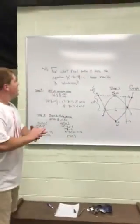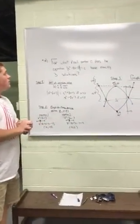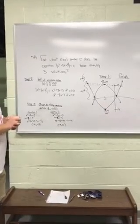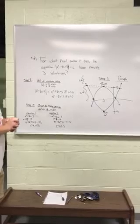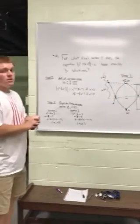So for number 18, for what real number C does the equation absolute value of x squared plus 8x plus 3 equals C have exactly three solutions?